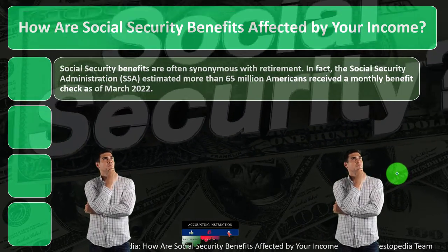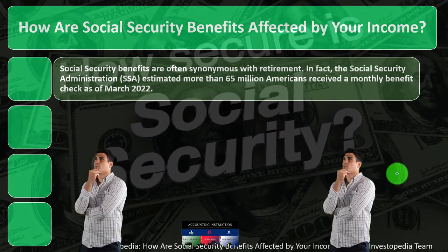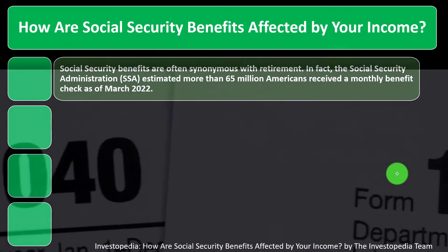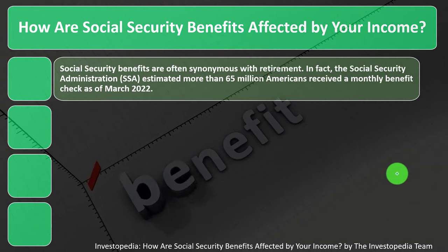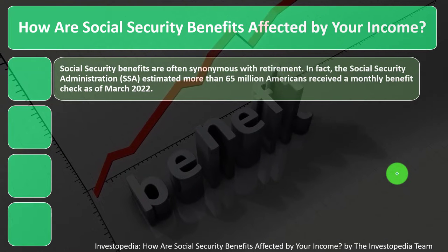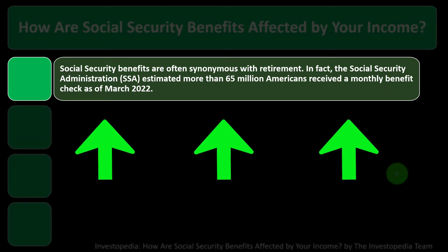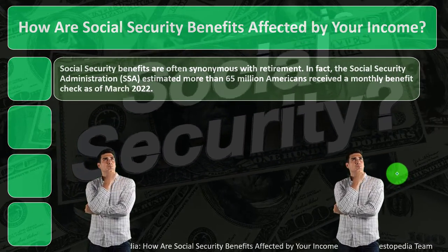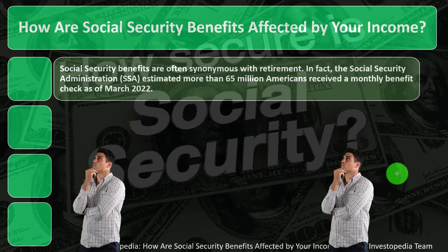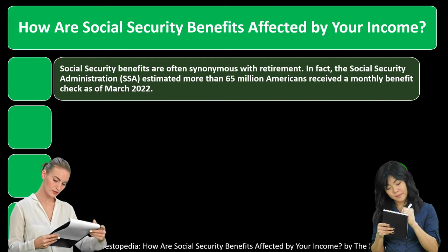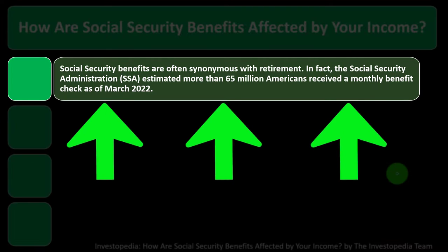When thinking about Social Security, there are two sides: when we're putting money in through payroll taxes or self-employment tax, and when we receive the benefit. There is a connection between the two because how much you pay into Social Security impacts how much benefit you get. Social Security benefits are often synonymous with retirement, and more and more we think of it not just as a welfare or safety net program but as something we can depend on.